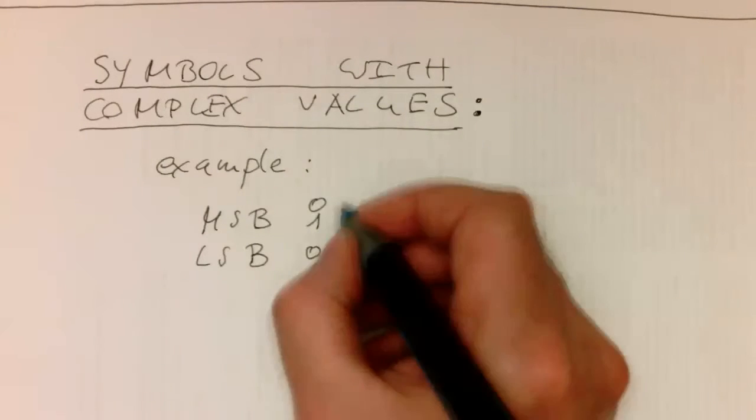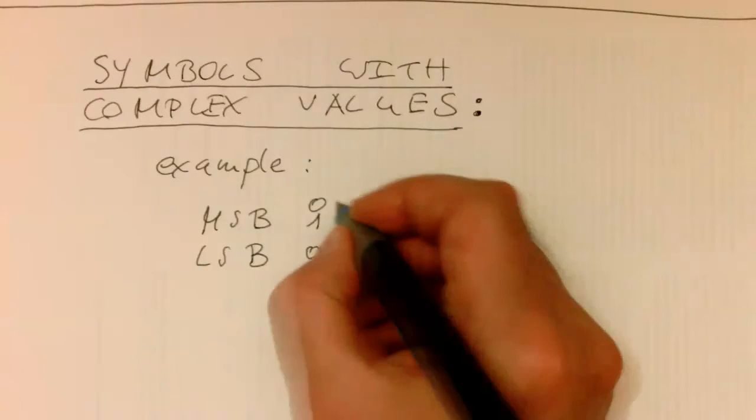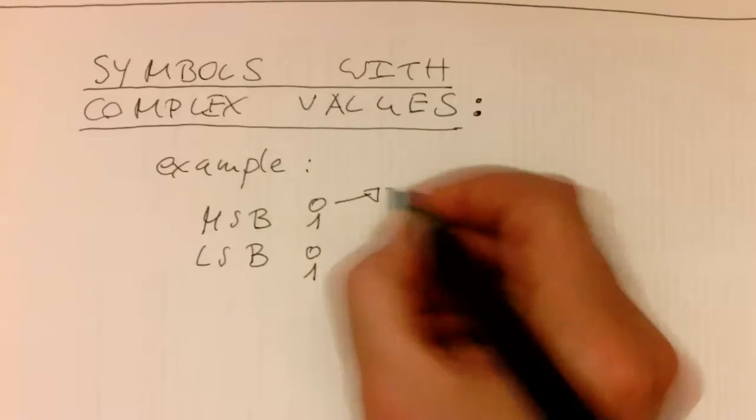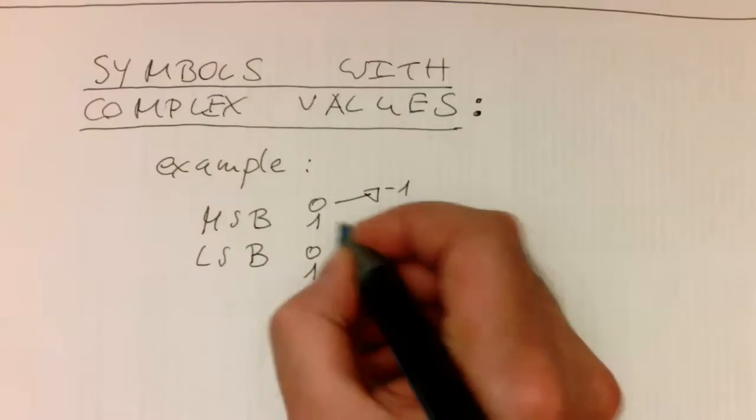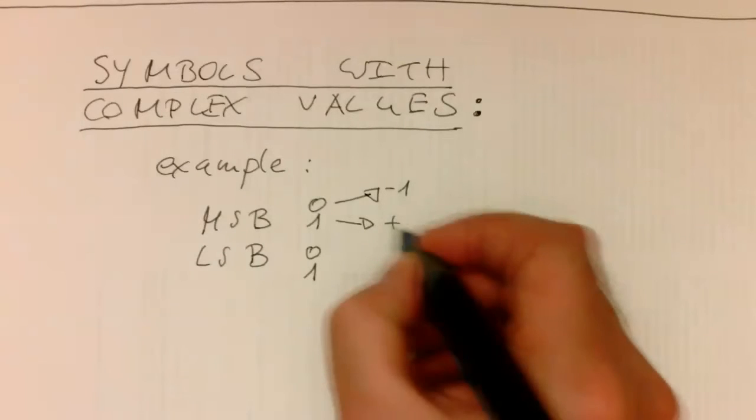But the other alternative is that we say zero turns into minus one, and one turns into plus one. That's what we had before.